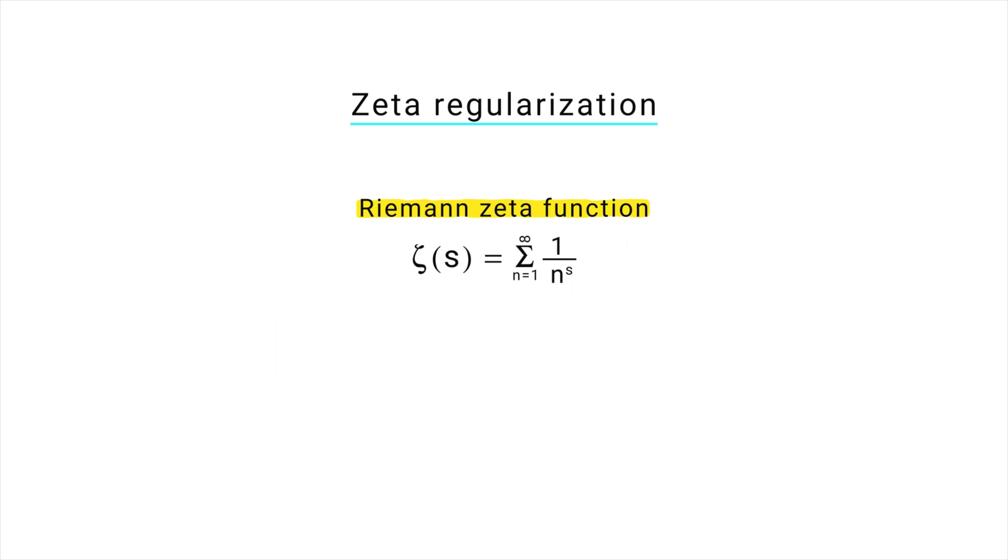Now here is the key point. The zeta function is well defined for any complex number s, except for s equal to 1. When s equal to minus 1, the zeta function becomes the sum of all natural numbers.